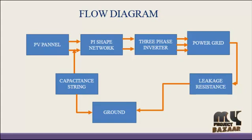The leakage resistance is used to find out the leakage current flowing through the power grid and PV panel and also find out the leakage voltage from this circuit. After that, the PV panel negative terminal is connected to the capacitor string.